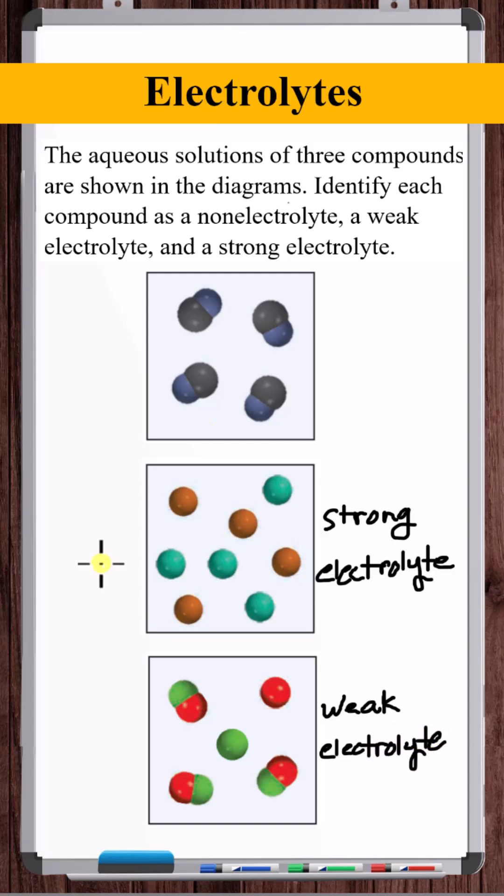A non-electrolyte effectively produces no ions in the solution. So this diagram here, where none of the molecules are dissociated, this is the non-electrolyte.